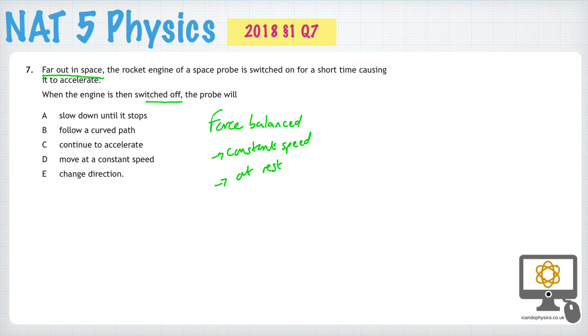Now the trouble with at rest is the object was already moving. So if the forces were turned off, then it would continue to move. So it will move at a constant speed. So the answer has to be D.